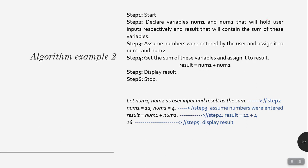To walk through it: let num1, num2 as user input and result as the sum. Assign num1 = 12 and num2 = 4 — assume those numbers were entered. Then result = num1 + num2, so result = 12 + 4. Display the result, which is 16. From this example, we just need to use the algorithm from the previous example and add steps that assign the user's input to variables. Variables are just containers of a value, and they may or may not change depending on the algorithm's implementation.